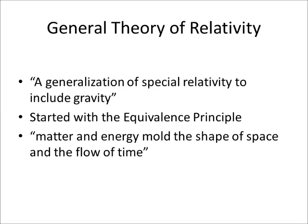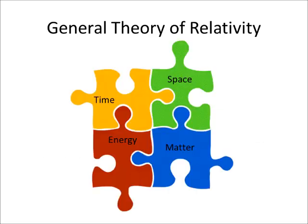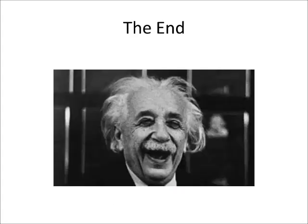Einstein used this theory to help show that matter and energy mold the shape of space and the flow of time. He was very adamant in his belief that there is some connection between time, matter, space, and energy. The general theory of relativity differs from the special theory in that it includes larger objects on the astrophysical level rather than two particles being compared to each other. Because of this, the general theory was not widely accepted at first — scientists saw that they did not have much use for a theory that focused mainly on a larger scale. After many years of research, Einstein came up with theories that changed the way that scientists and everyday people see the universe.